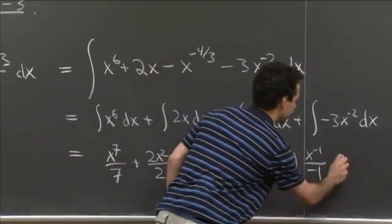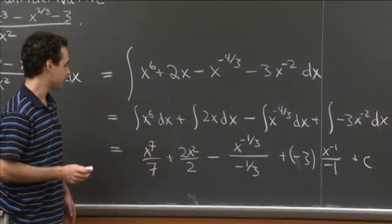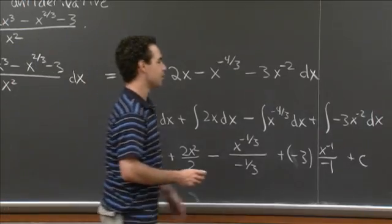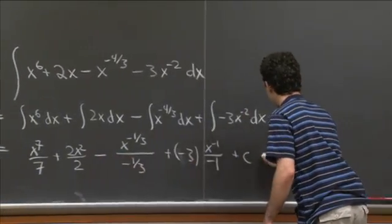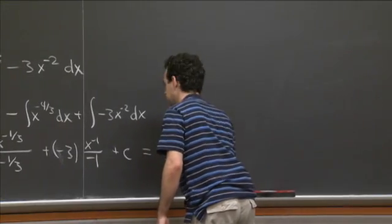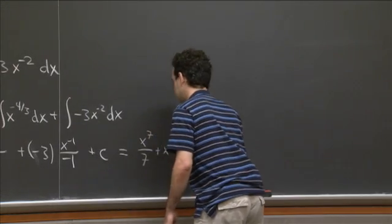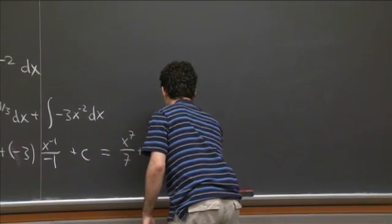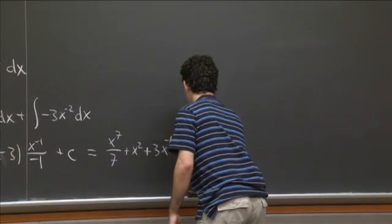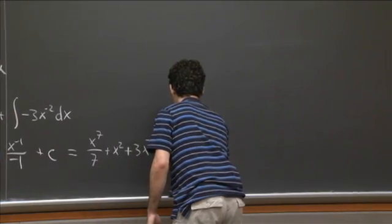And if you like, any constant we add to this, it'll still be an antiderivative. And now we could do a little bit of arithmetic to rearrange this into nicer forms if you wanted. So you could rewrite this as x to the 7th over 7 plus x squared plus 3x to the minus 1 third plus 3x to the minus 1 plus a constant.